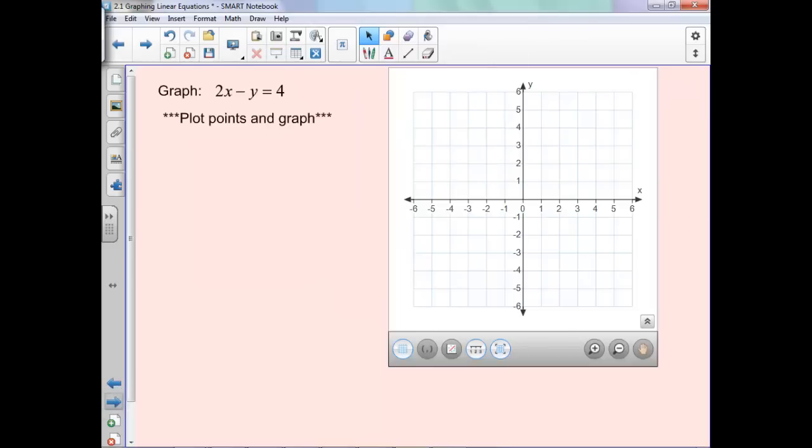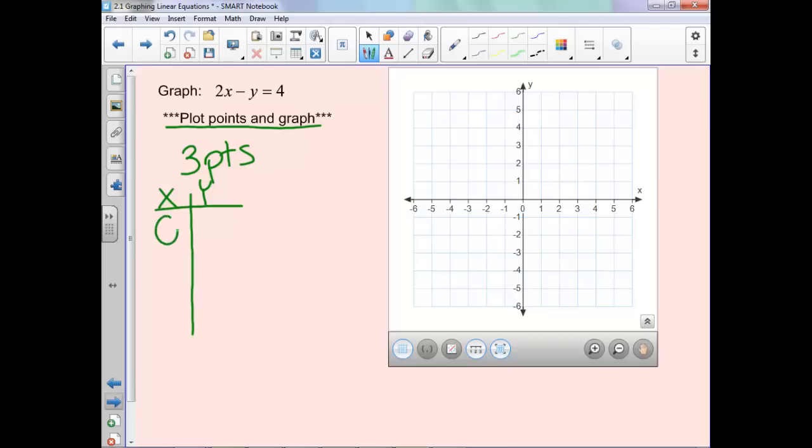We're going to graph this equation, 2x minus y equals 4. We are going to learn different ways of graphing later, but for right now, we're just going to plot some points. We need to pick 3 points and plot them. We'll pick 3 x values and figure out what the corresponding y values are. Some easy x values to pick would be 0, 1, 2. I'm just going to go with 0, 1, and 2.